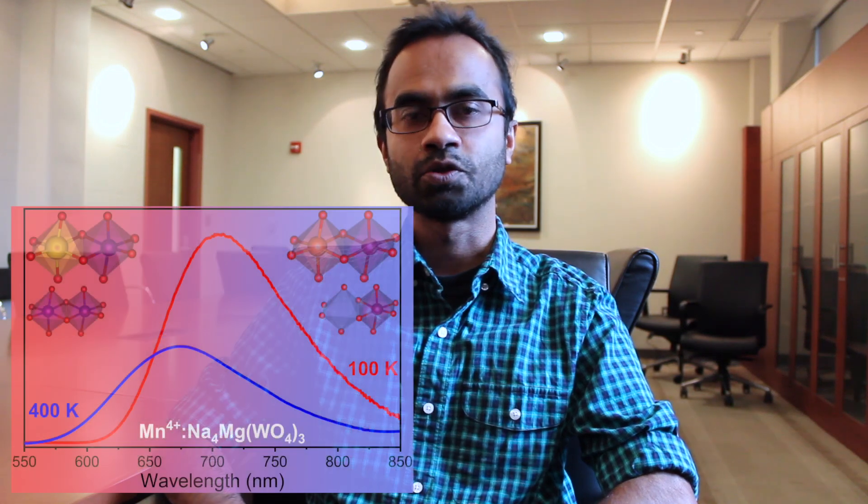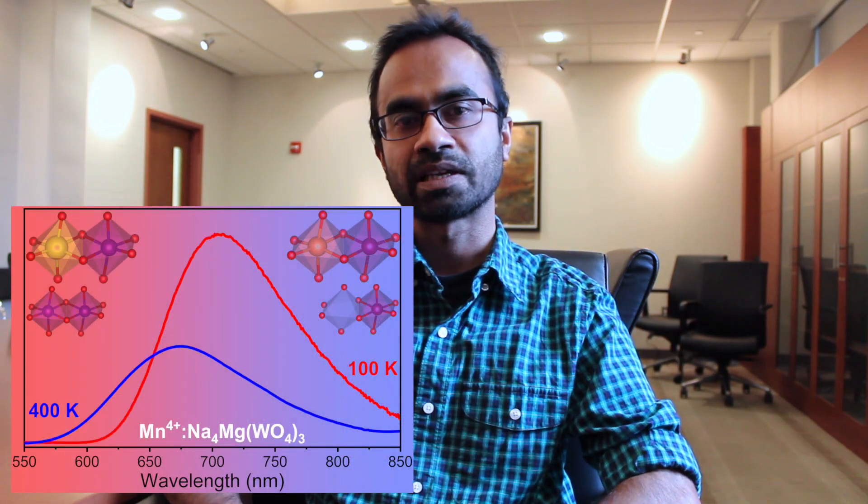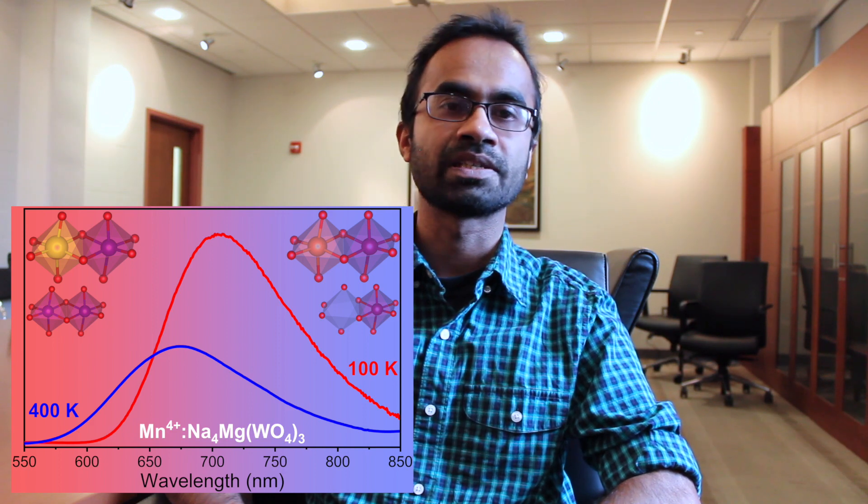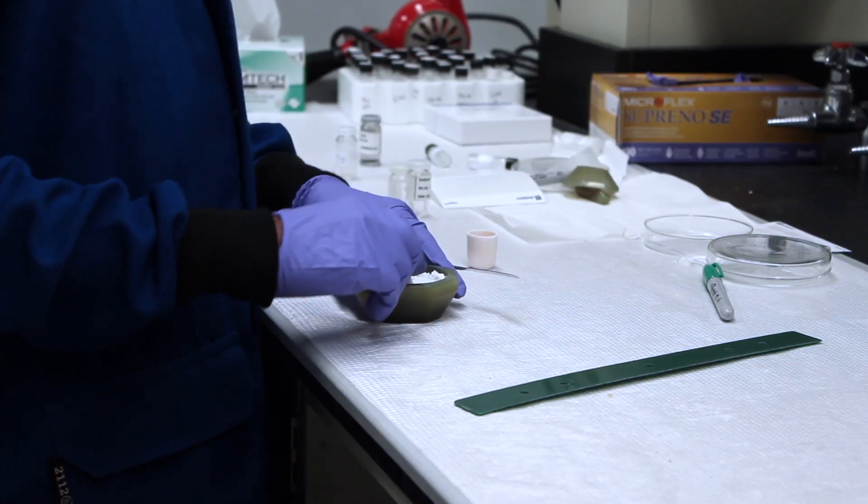Luminescence thermometers use the temperature dependence of the luminescence response for temperature sensing. They are useful for temperature sensing in inaccessible conditions. For example, if you need to measure the temperature inside a cell or the temperature of a gas flow from a gas turbine, you can potentially use these luminescence thermometers.